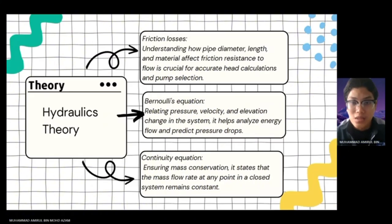Next, I would like to present about theory. We break it into three parts. First is hydraulics theory. For the hydraulics theory, we have three points. Firstly is friction loss: understanding how pipe diameter, length, and material affect friction resistance to flow is crucial for accurate head calculations and pump selection. Second is Bernoulli equation, relating pressure, velocity, and elevation changes in the system. It helps analyze energy flow and predict pressure drops. Thirdly is continuity equation, ensuring mass conservation. It states that the mass flow rate at any point in a closed system remains constant.